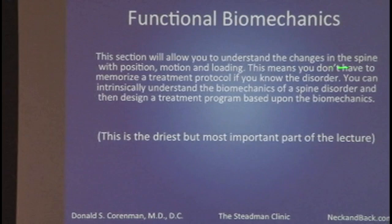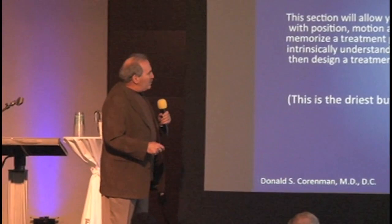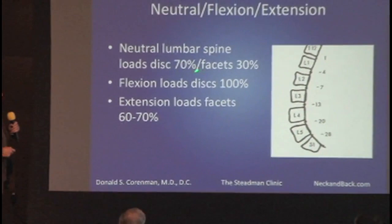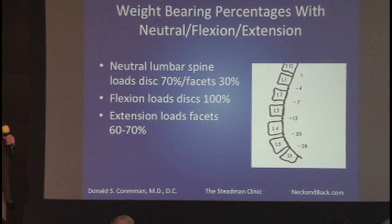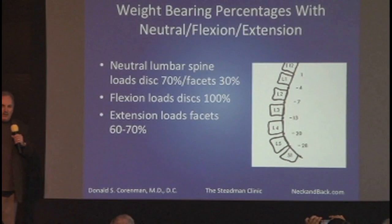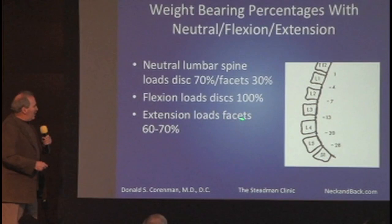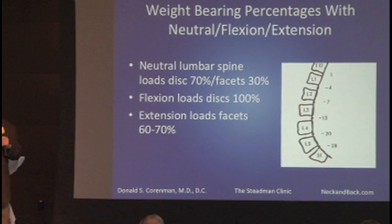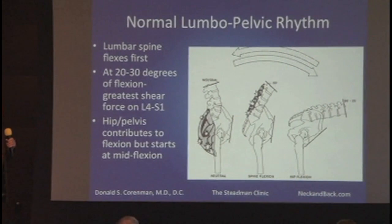Now we talk about functional biomechanics. This allows you to understand the changes in the spine with position, motion, and loading — meaning you don't have to memorize a treatment protocol if you know the disorder. If you understand the why, you'll understand the how. In the neutral lumbar spine, the discs are loaded 70% and the facets 30%. Flexion loads the discs 100%, and extension loads the facets 60% to 70%. Now you have information you can put into a training program to ameliorate pain.